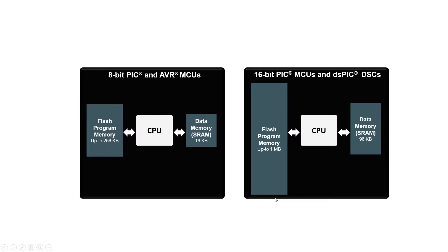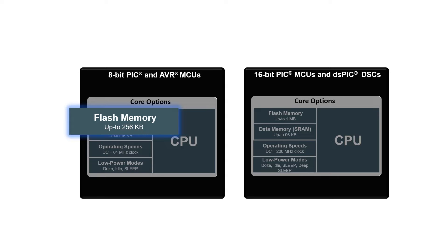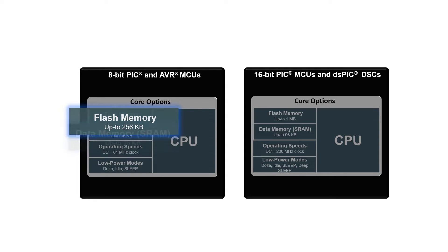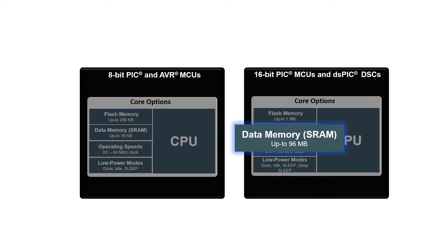In addition to executing embedded firmware faster, more memory may be needed in some applications to accommodate more elaborate software. 8-bit microcontrollers provide up to 256 kbytes of flash program memory and up to 16 kbytes of data SRAM storage. 16-bit devices can accommodate up to 1 megabyte of program flash and up to 96 kbytes of SRAM data memory.